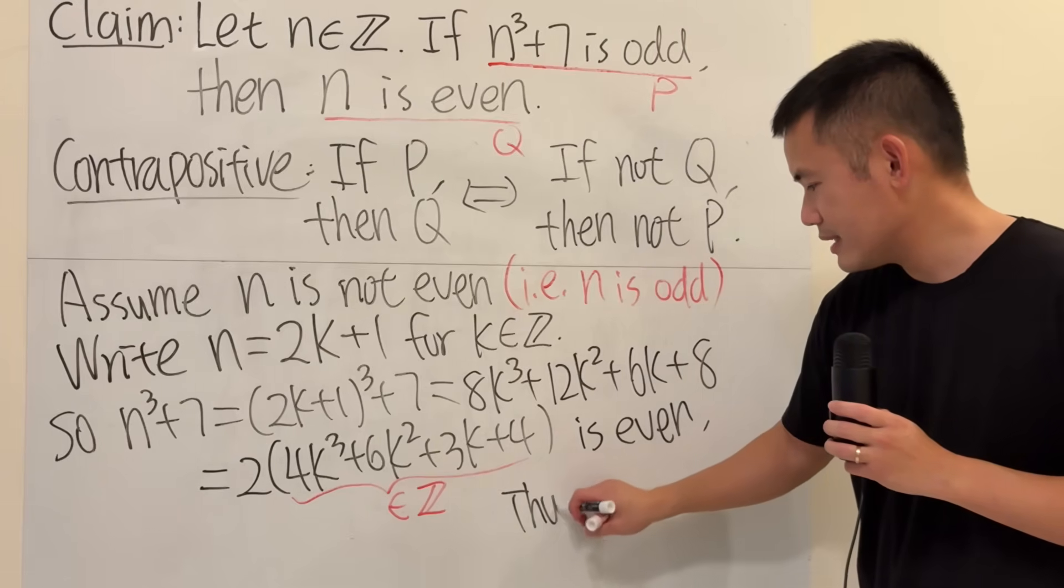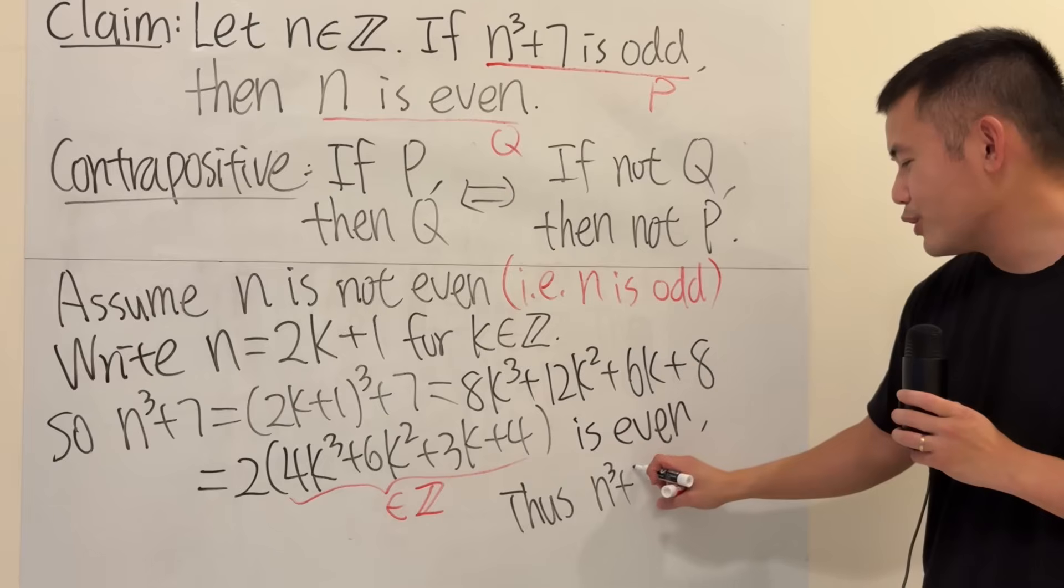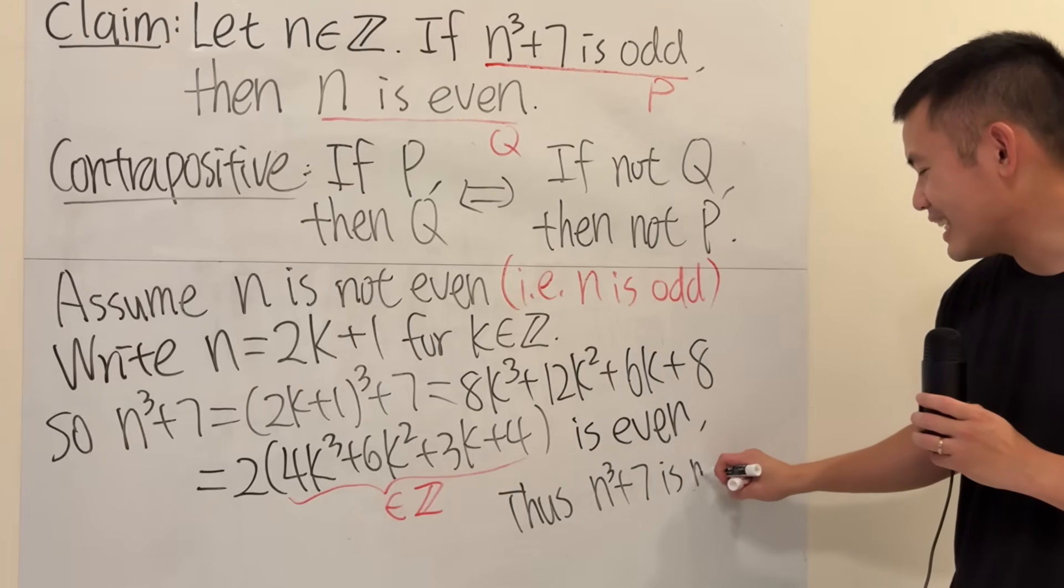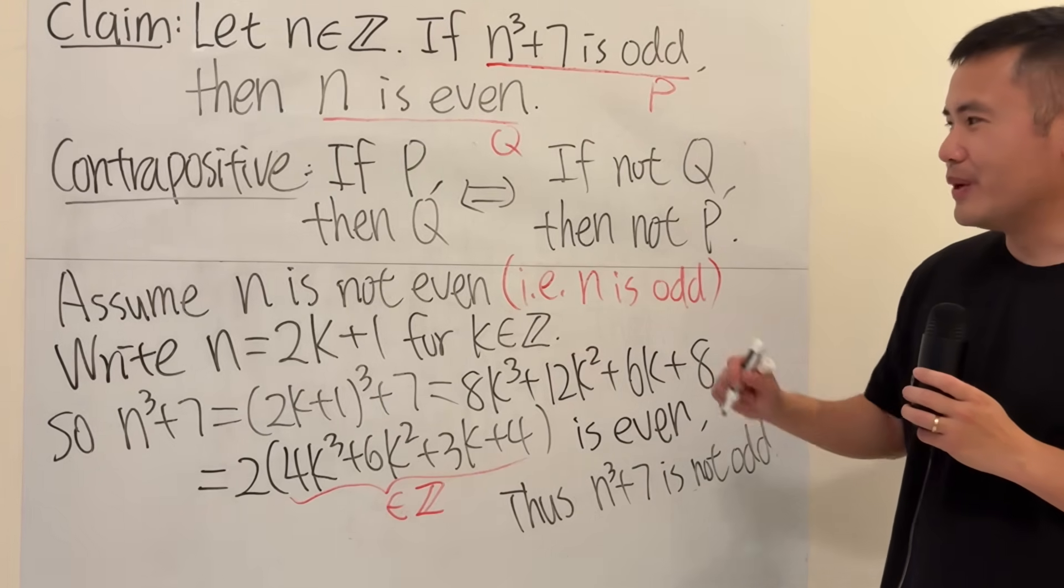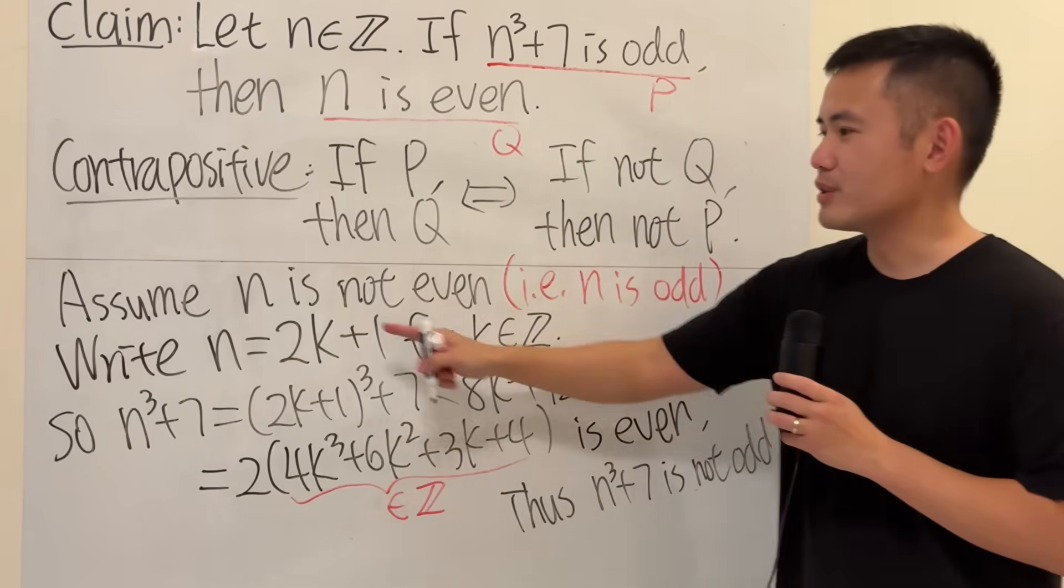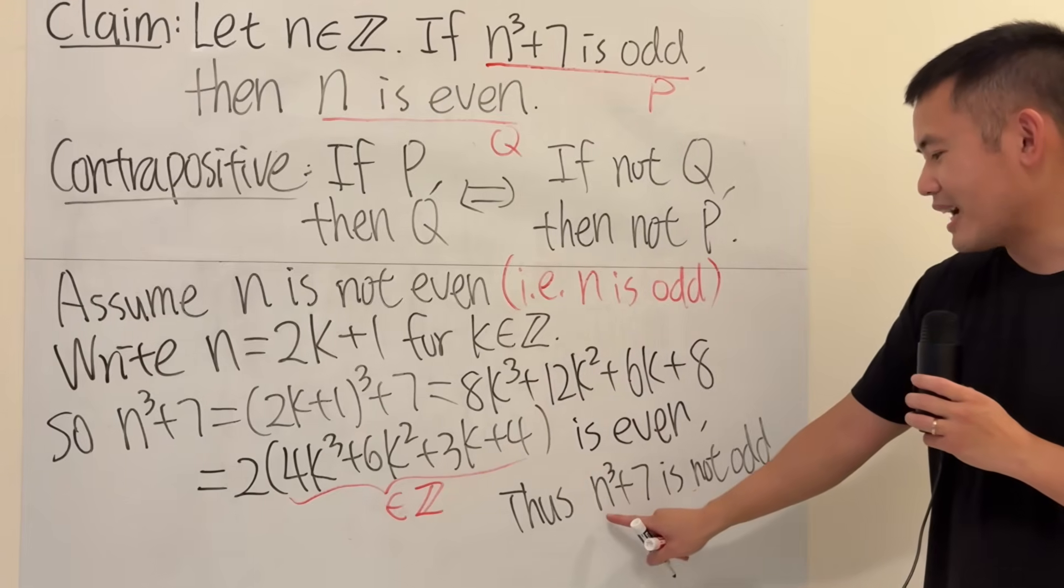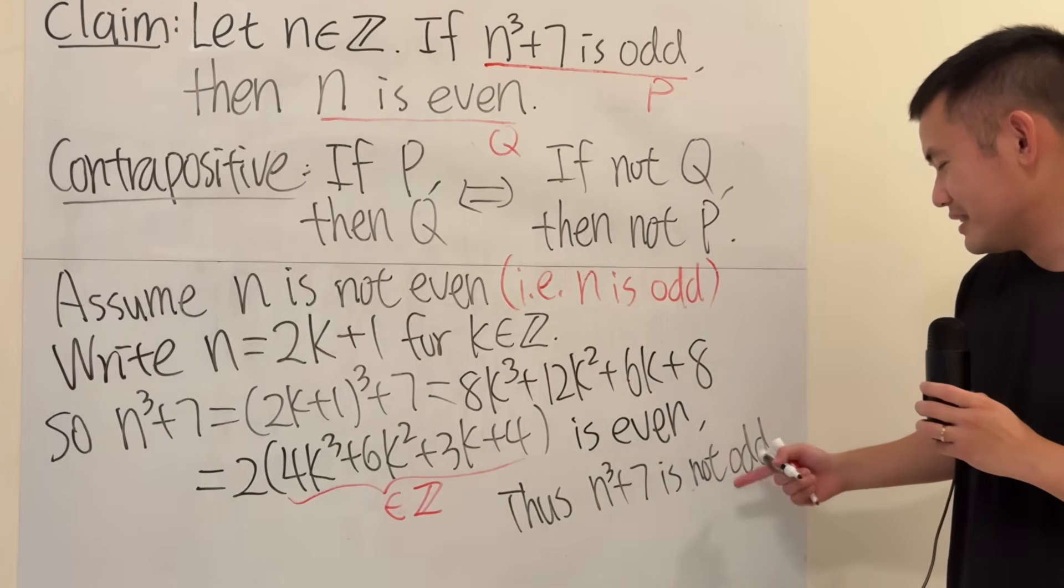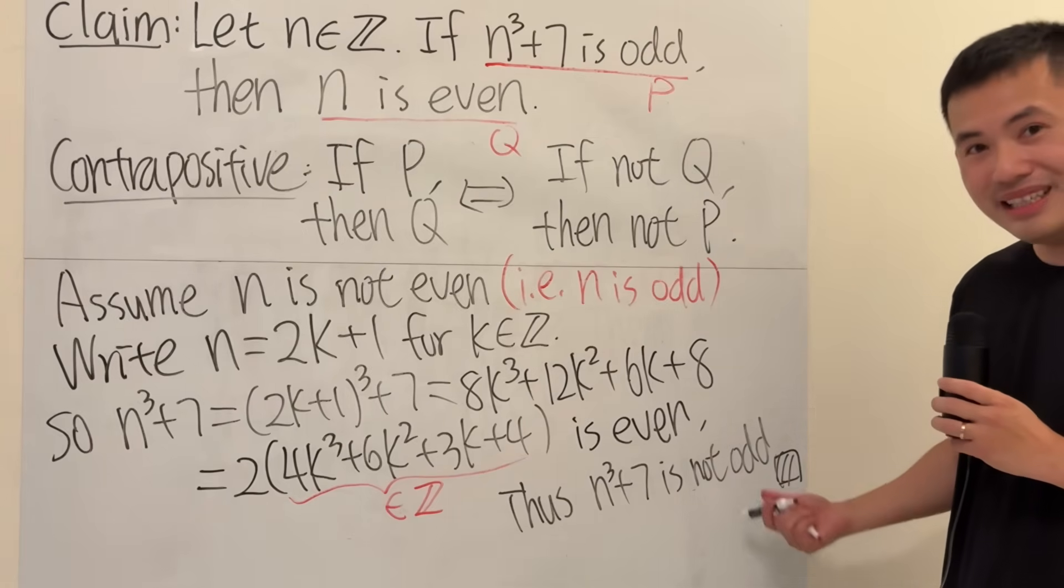Thus, we can see that, depending on how you want to write it, you can say n cubed plus 7 is not odd. So, we have done this precisely. If not p, then not q. Because we have, if n is not even, then we have shown that n cubed plus 7 is not odd, then we are done. Put a box and then shade it in. Yeah, just like this.